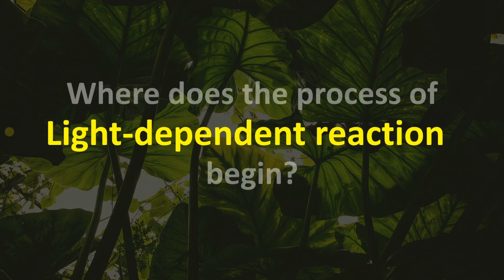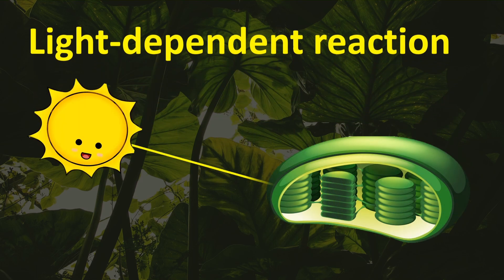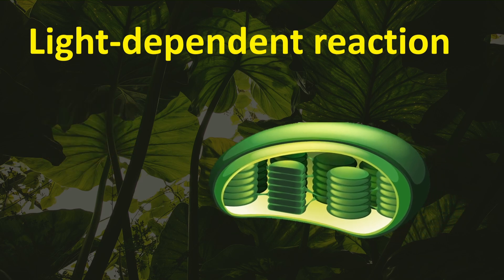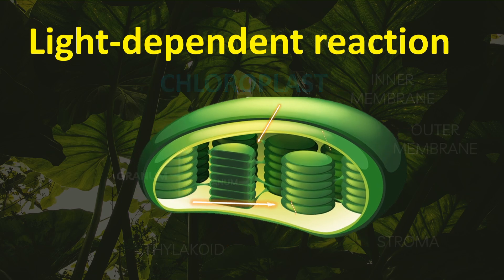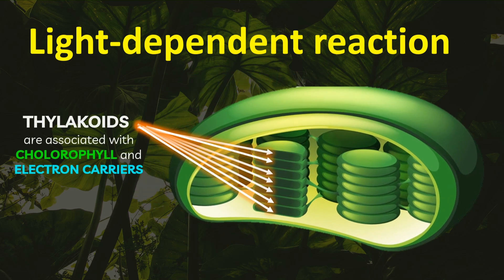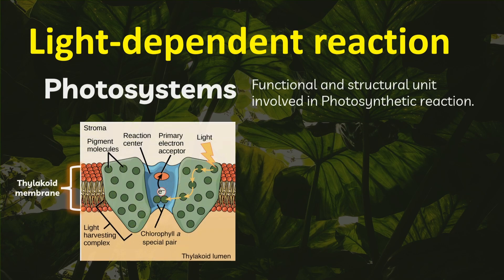The first set of reactions which begin the process requires light, so it is named the light reaction or light-dependent reaction. Chloroplast captures sunlight. In the light-dependent reaction that takes place in the grana, light strikes chlorophyll or an accessory pigment within a chloroplast, energizing electrons within that molecule. Chlorophyll and electron carriers are organized into units called photosystems — a functional and structural unit involved in photosynthetic reaction.